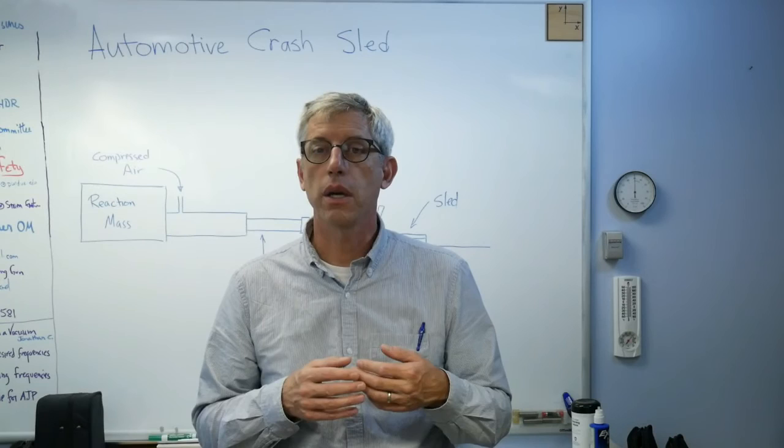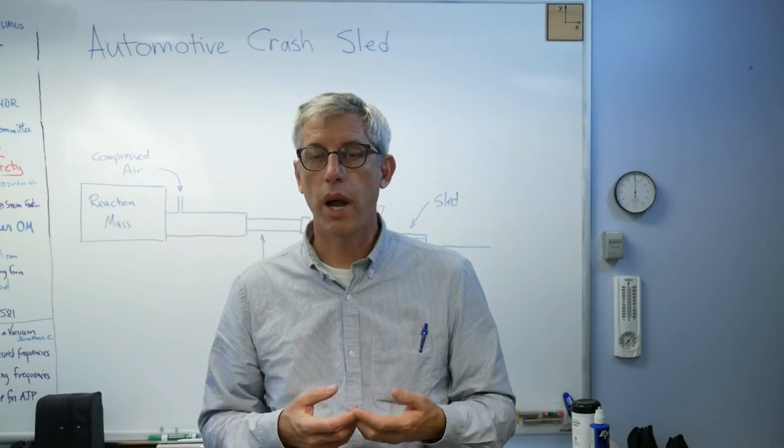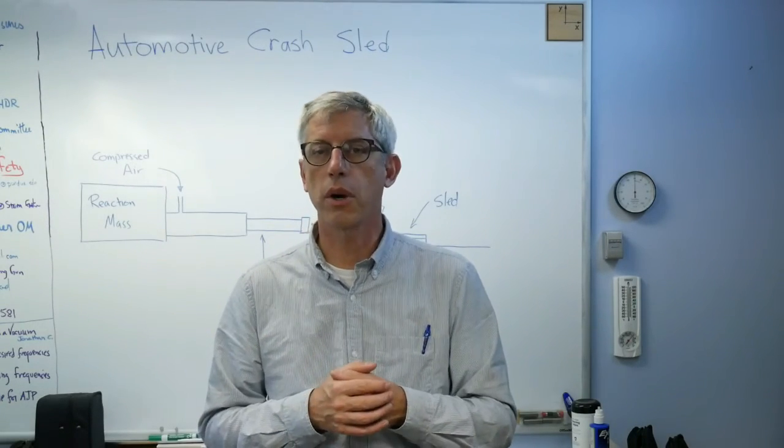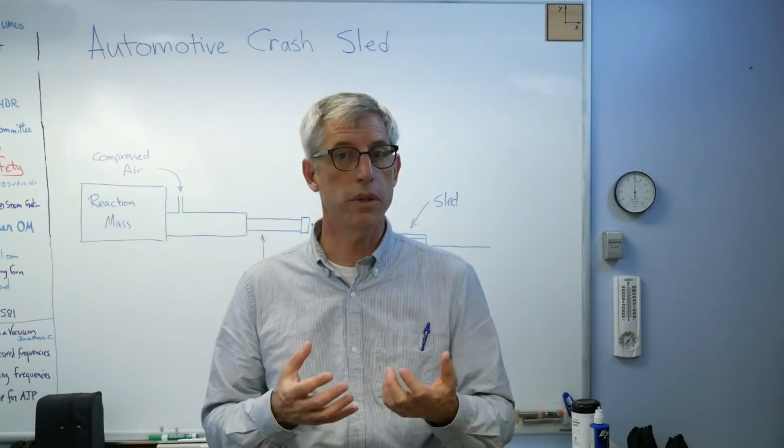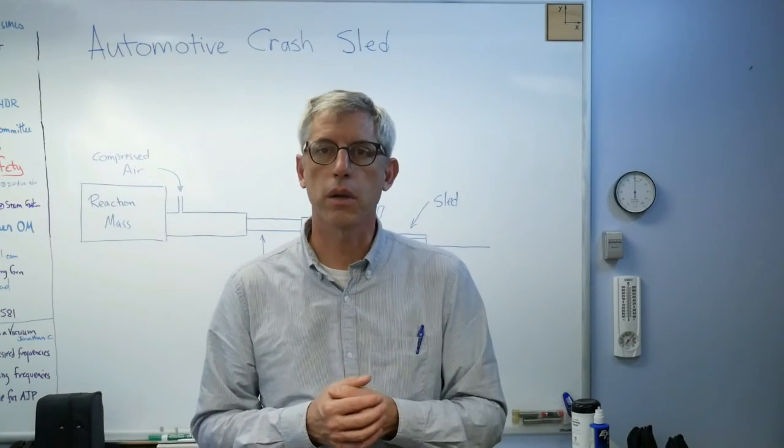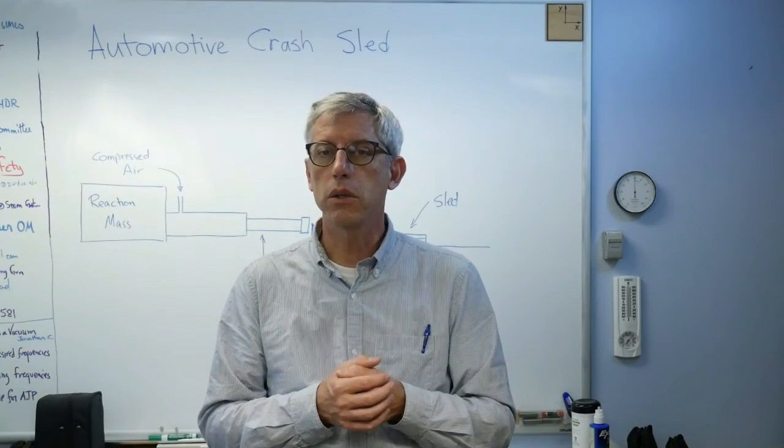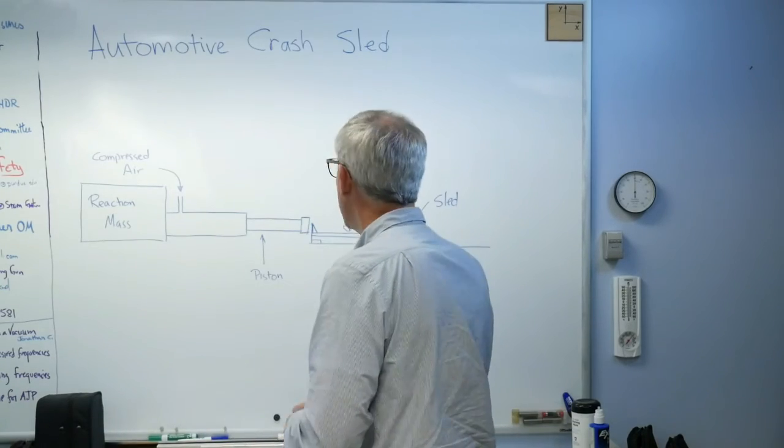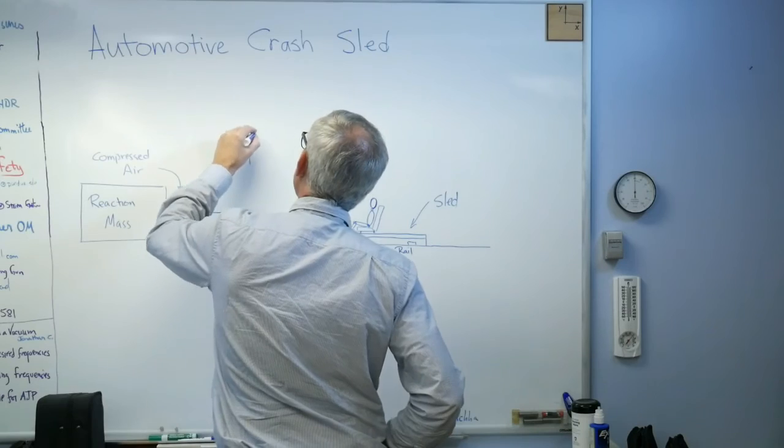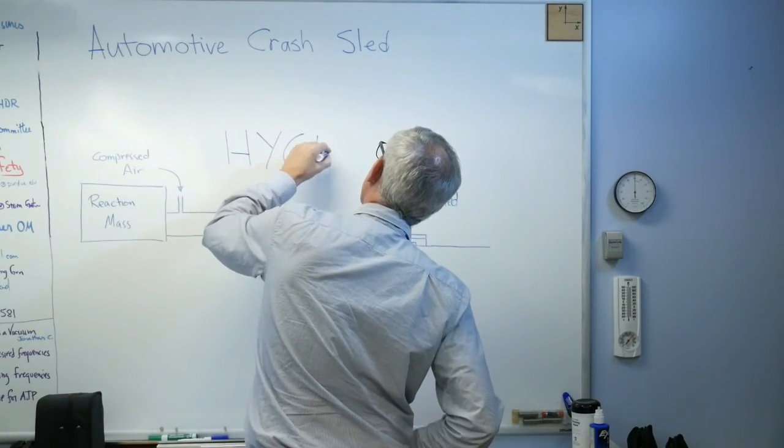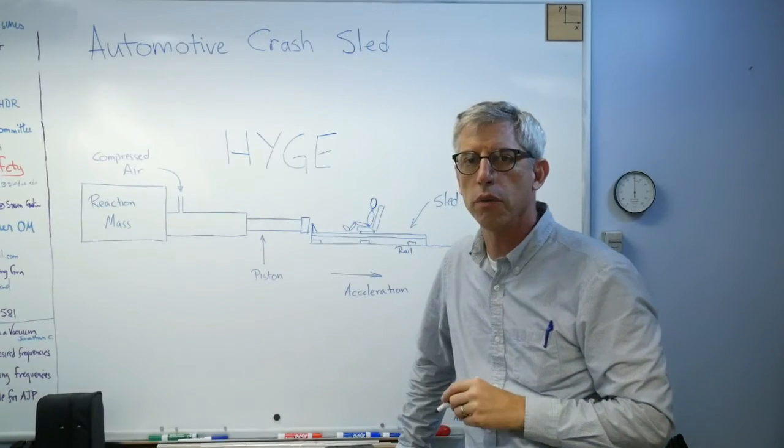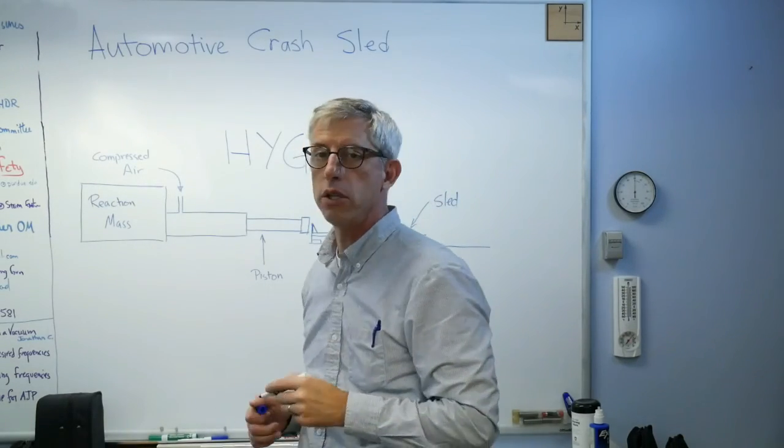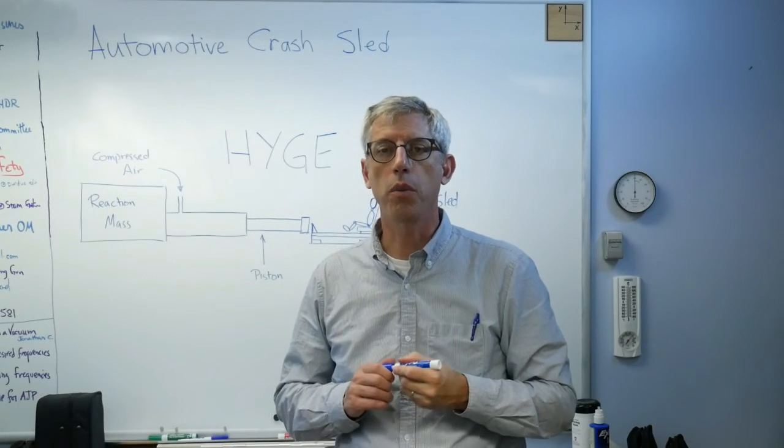So there you have it - this is how to run a crash test using a crash sled rather than a full car. You can test little components, partial parts of the car before the car is completely designed, before it's in production, which is where you better be doing your crash test. Last thing I should tell you - this type of sled is called a high g sled, H-Y-G-E. I don't know if that's the brand or the type, but there's more than one kind of sled. This one is a high g sled. I hope this helps, and I'll see you next time.